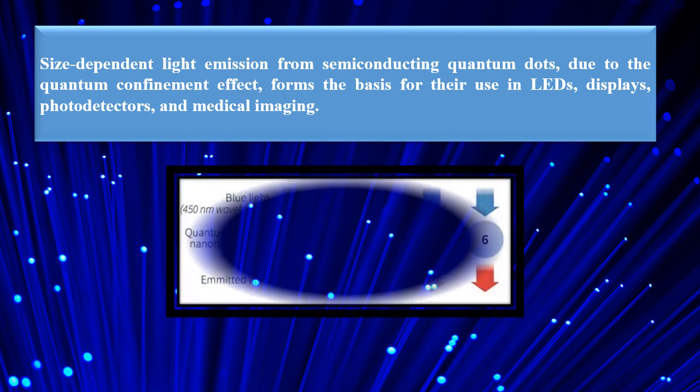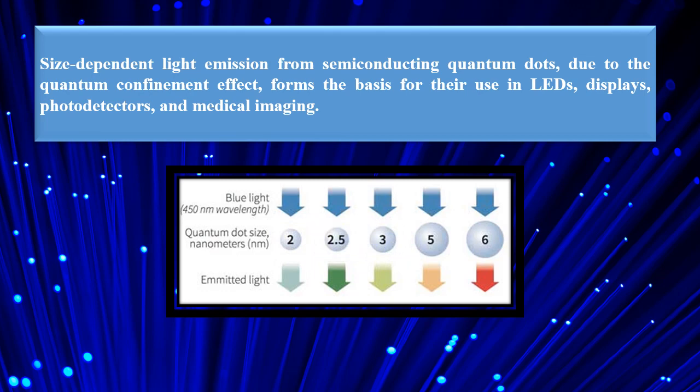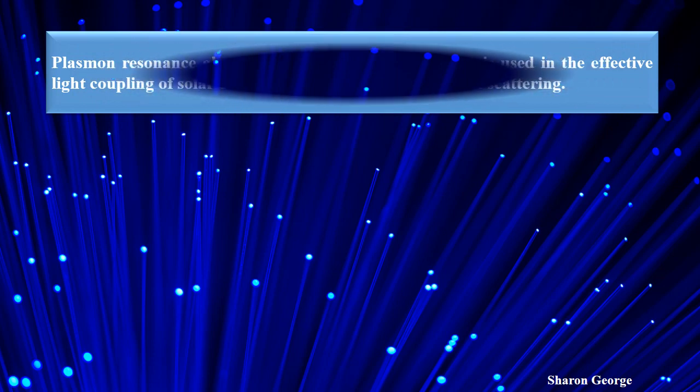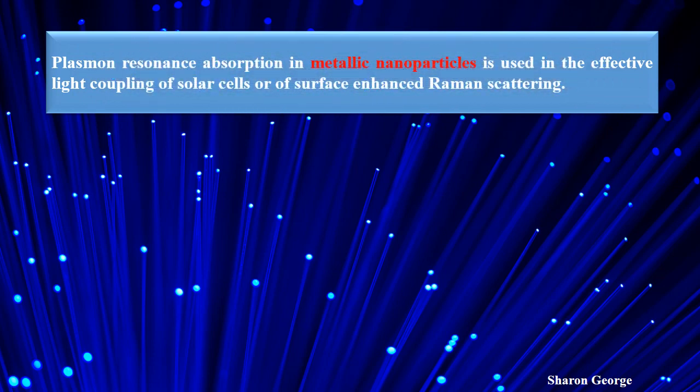In the picture we can see quantum dots of different sizes which emit different wavelengths of light. Another material is metallic nanoparticles. These metallic nanoparticles show plasmonic absorption, and that is used in the effective light coupling of solar cells or surface-enhanced Raman scattering. Another important application is bioimaging, where we can use these plasmonic nanoparticles.